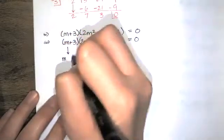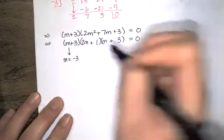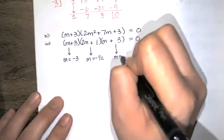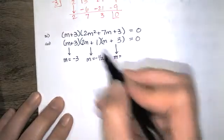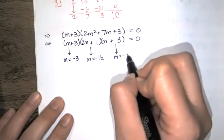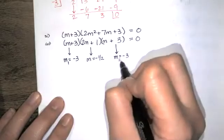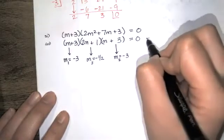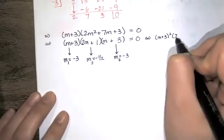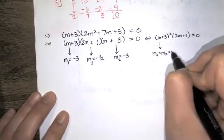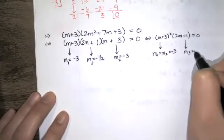So we have m plus 3 times 2m plus 3 times 2m plus 1 equals 0. The first factor gives m equals negative 3, the second factor also gives m equals negative 3 — that's a repeated root. And the third factor gives m equals negative 1/2. So m1 and m2 are both negative 3 (a repeated root), and m3 equals negative 1/2. We can rewrite the characteristic equation as (m plus 3) squared times (2m plus 1) equals 0.